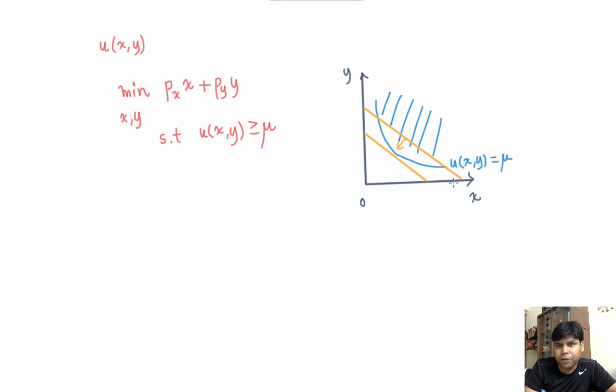The solution will have this property: the slope of the iso-expenditure curve equals the slope of the indifference curve. The solution to this problem is known as Hicksian demand.